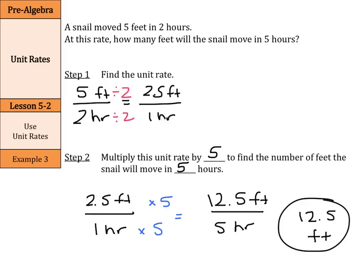So, be sure with unit rates to use your units. Feet, hours, miles, gallons. Your goal is to get the bottom part, the denominator of the rate, to be 1 by dividing by that on top and bottom. And you can do several different things with it. Good luck.